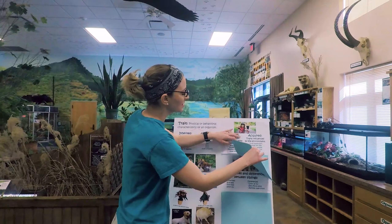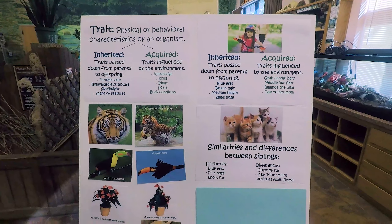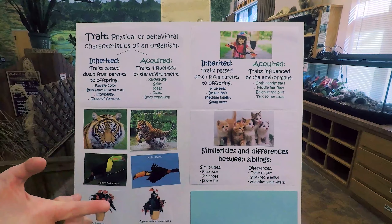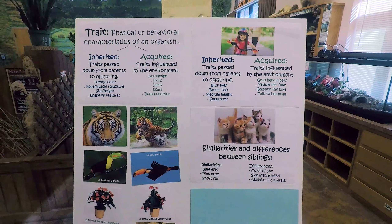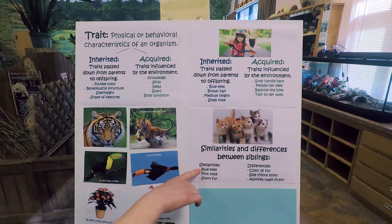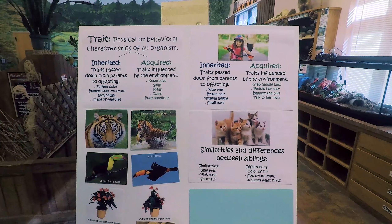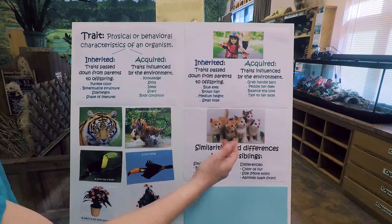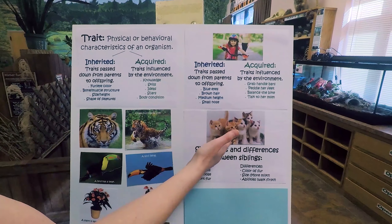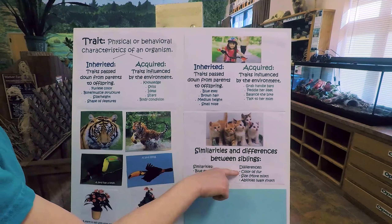Even within sibling groups, traits can be different. Here is a picture of a litter of kittens that had the same mom and dad. Even among five individuals of the same species who are brothers and sisters, there are similarities and differences in their traits — both inherited and acquired. All five kittens have blue eyes, pink noses, and short fur — all inherited traits passed down from their parents. But you'll notice differences: some have different colors of fur. One is almost all orange, whereas another is mostly white, meaning their parents were probably some orange, white, and maybe even black in fur color. Even amongst siblings, they can have differences in their inherited traits.